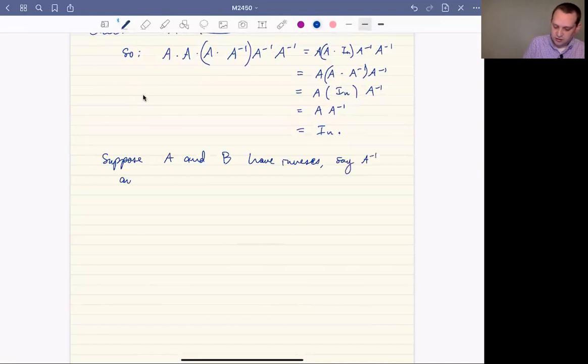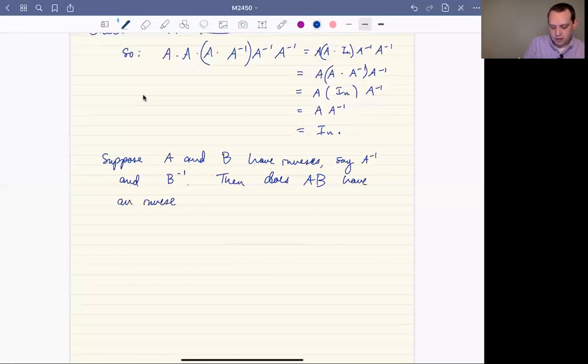Then I want to know does AB have an inverse, and I can't spell inverse, and if so what is it? If so what is it? So I want to find the matrix, whatever we want to call it, we can call it X, let's do that. I want to find the matrix X.